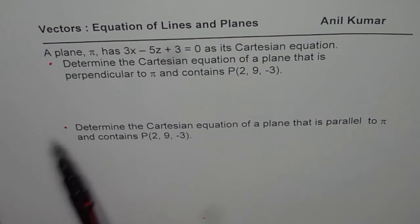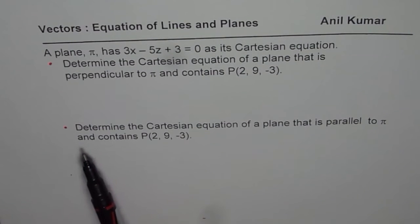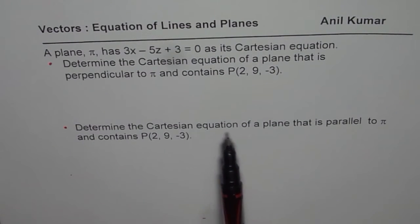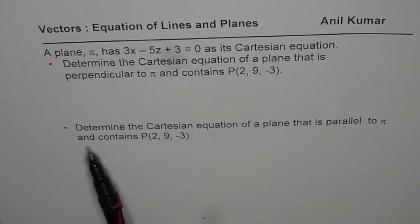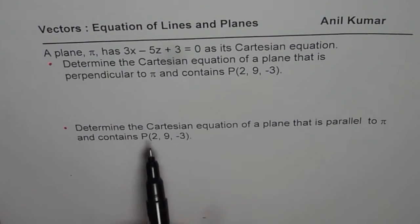That is the first part. And the second part to this question is: determine the Cartesian equation of a plane that is parallel to pi and contains the point given to you as 2, 9, minus 3. So that is the question. I'd like you to pause the video and answer the question.